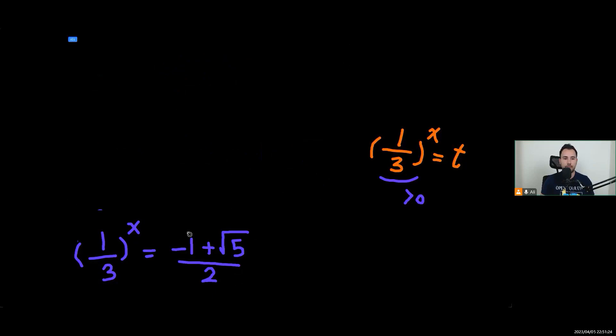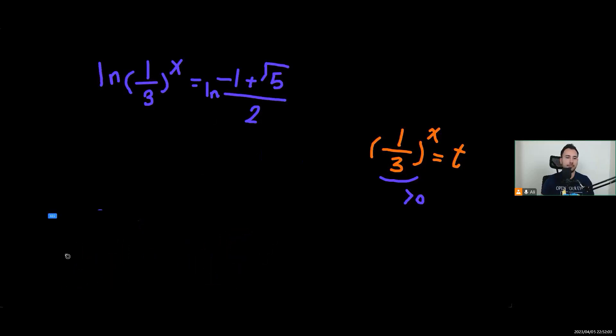So how to deal with this? Unfortunately x is in the power part. What do we do when this is the case? We add logarithms. So ln of 1 over 3 to power of x equals negative 1 plus square root of 5 over 2. Oh, I forgot to add the ln, I'm going to put it here. It looks a little messy.